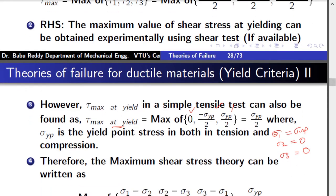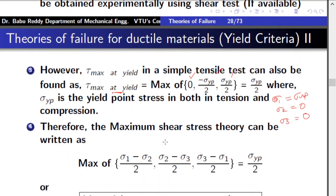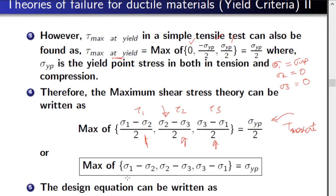We can rewrite the equation: the left-hand side is the maximum of tau_1, tau_2, tau_3 found from the individual principal stresses, and the right-hand side is tau_max at yield. Substituting sigma_yp/2, the factor of 2 cancels and we get: the maximum of |sigma_1 - sigma_2|, |sigma_2 - sigma_3|, |sigma_3 - sigma_1| should be compared with sigma_yp. If this value is greater than sigma_yp, failure has occurred.